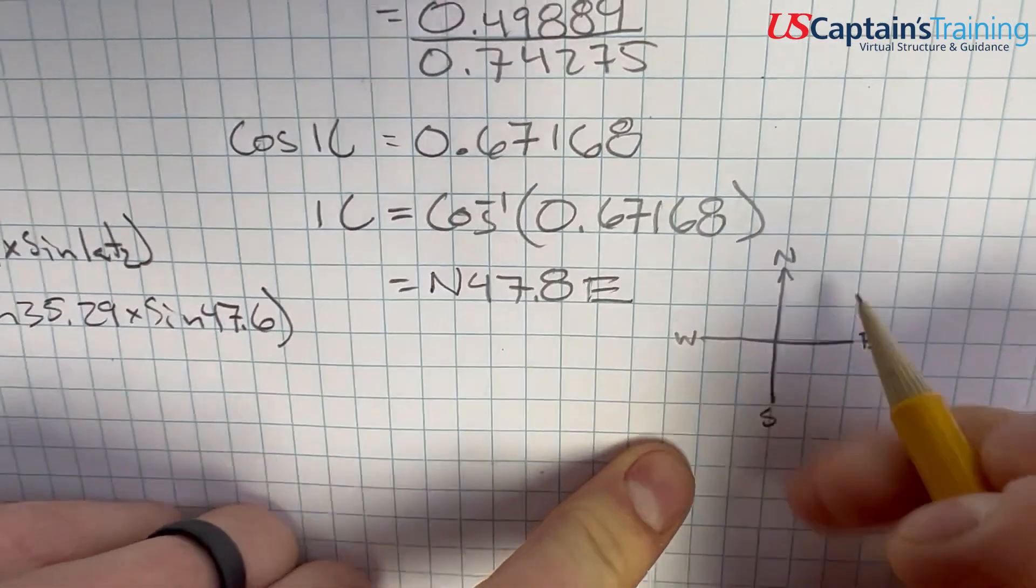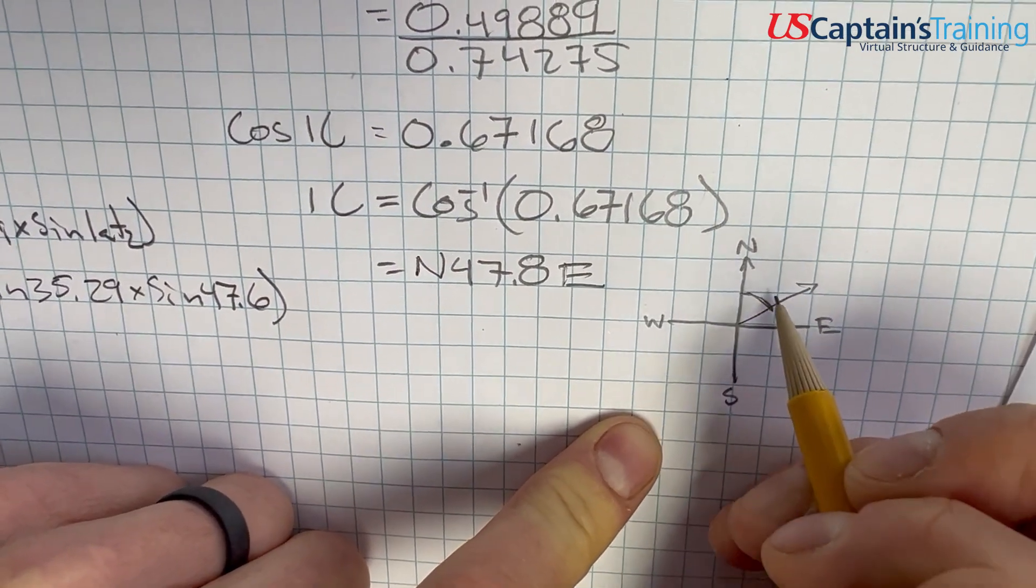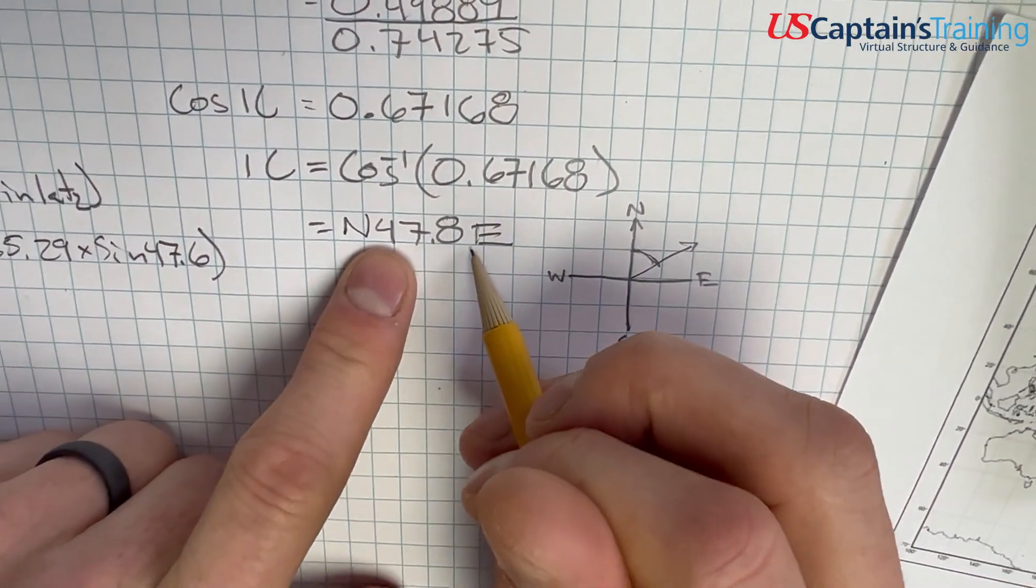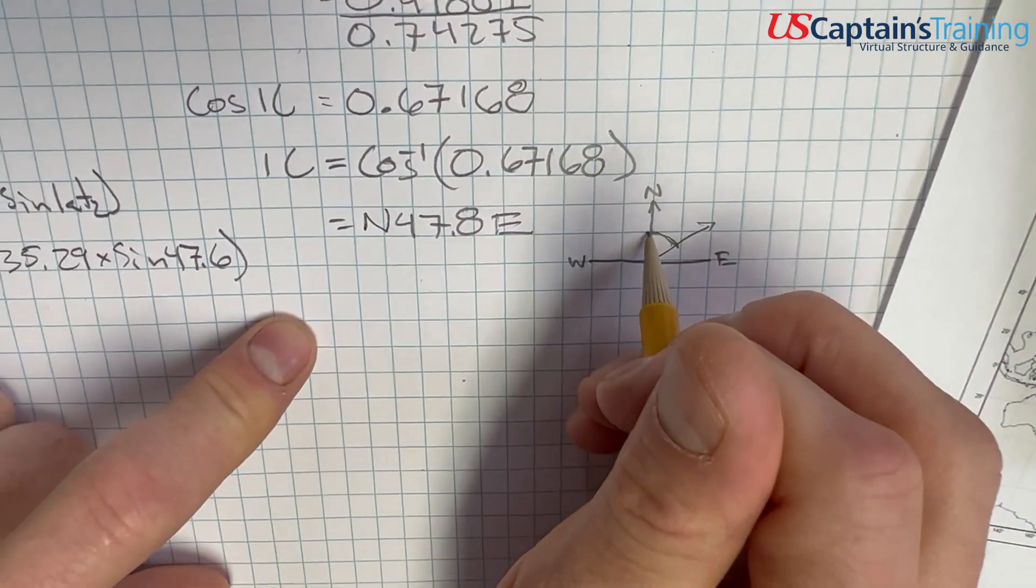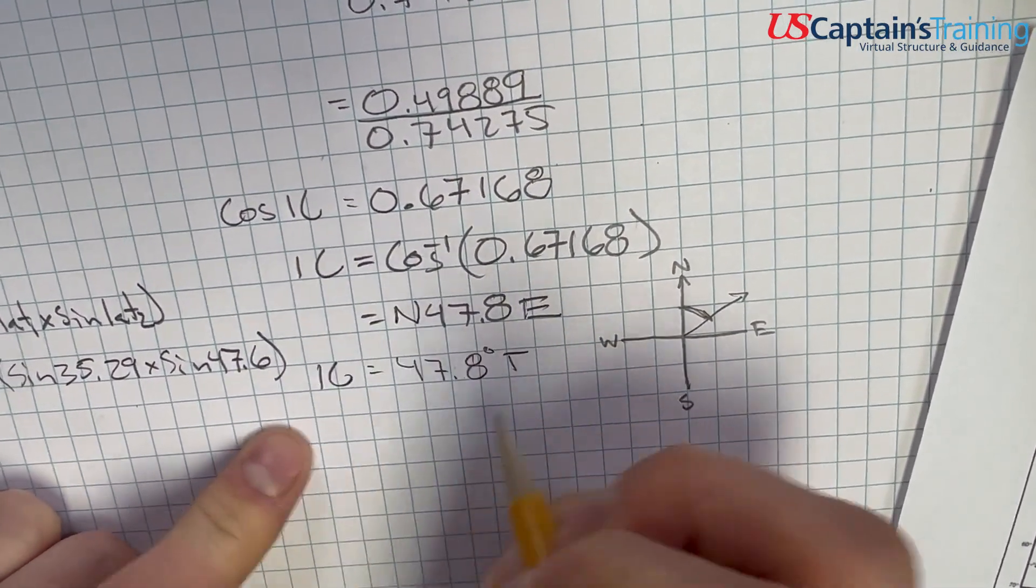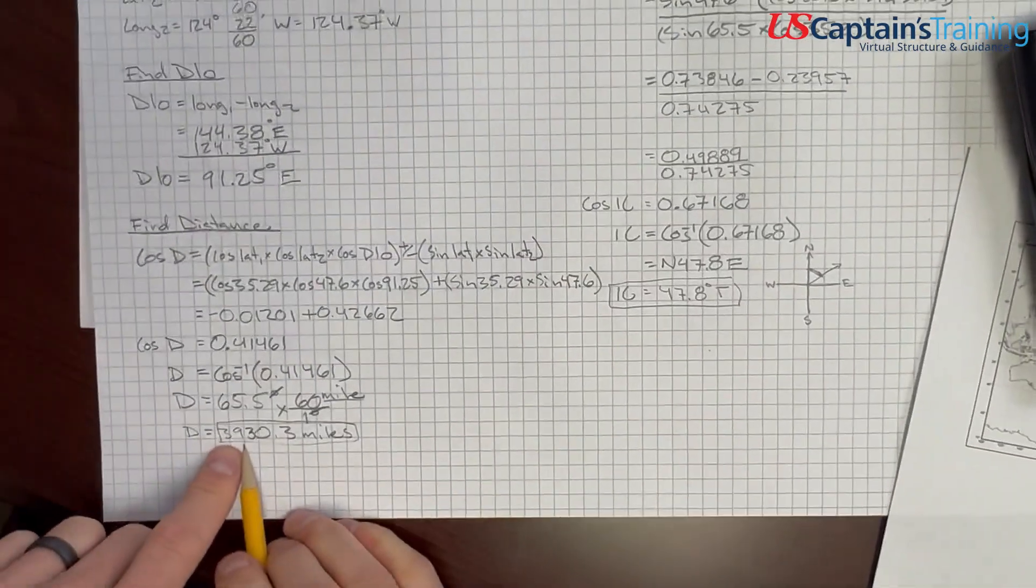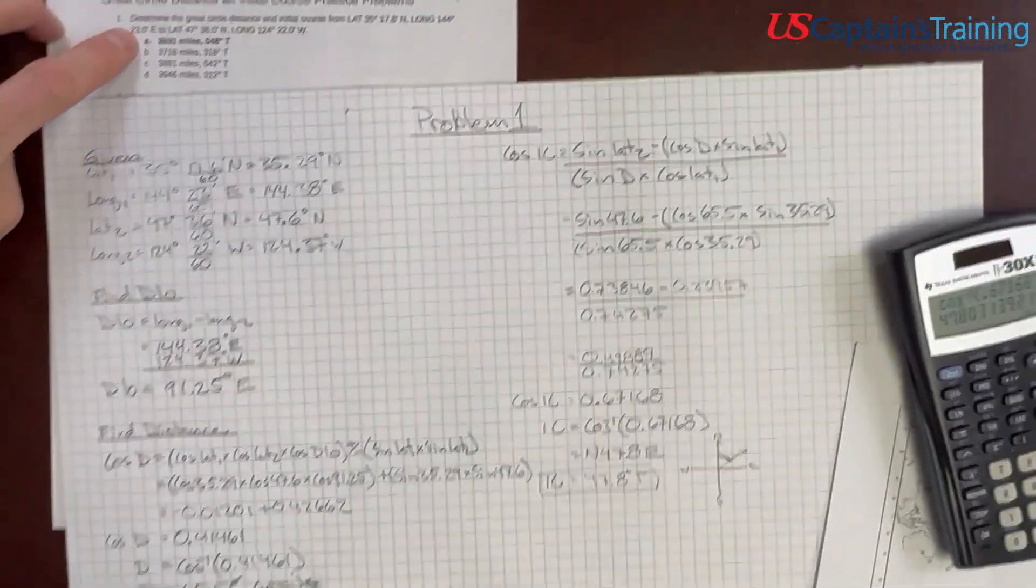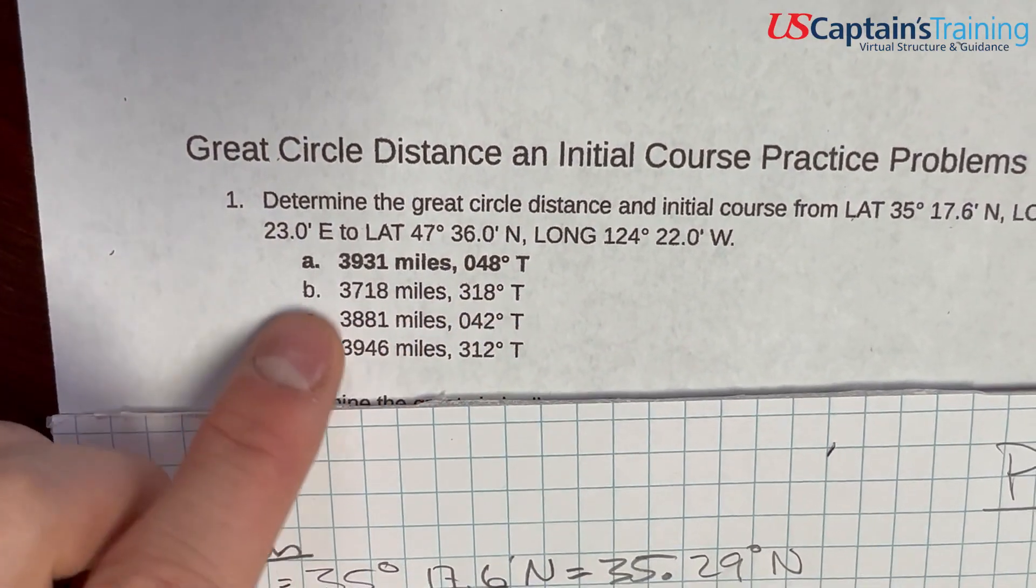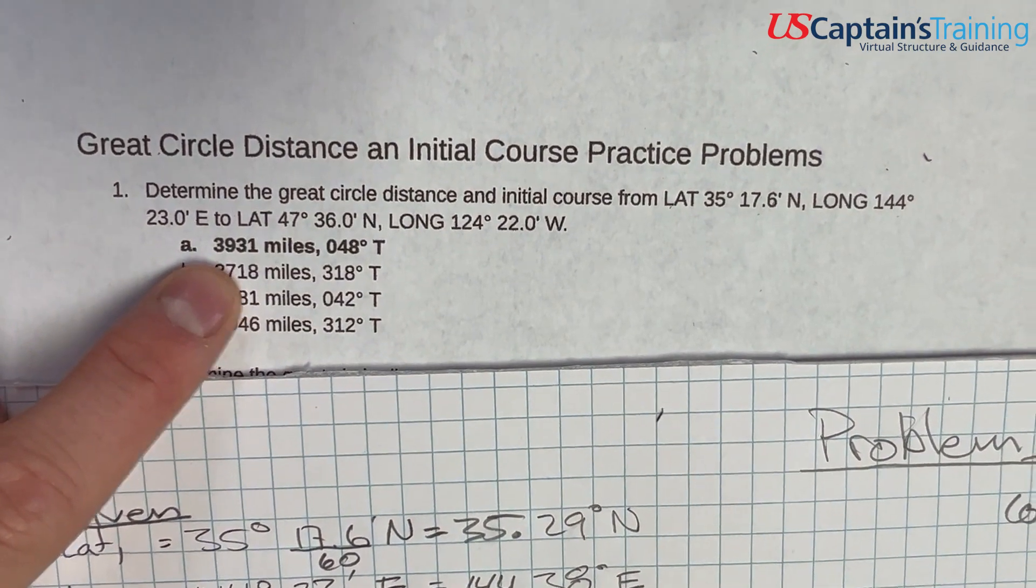If we graph this out, we're north, and then we're 47 from north to the east. This is where we are. So this happens to be, when we're in this northeast and we're less than 90, this quadrantal notation is same as true. So we are from north. We are indeed 47.8 degrees true. This is our initial course. So we have our initial course, 47.8, and our distance, 3930.3. And we come up here and check it out. We did get the right answer. We got 3931 miles and 48 true. None of these are really close. We could have just picked it out with the miles. But we went on and did the whole problem.